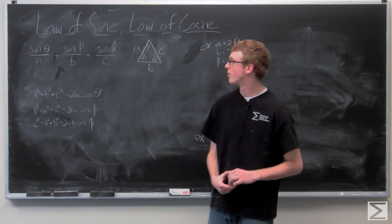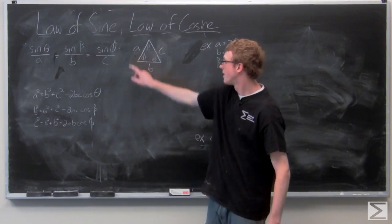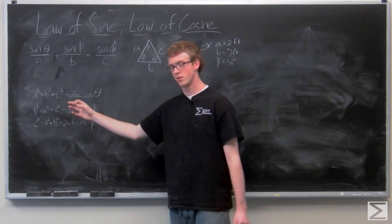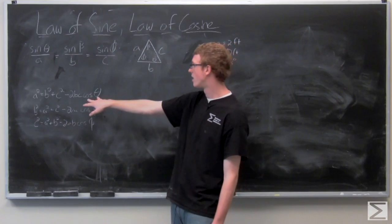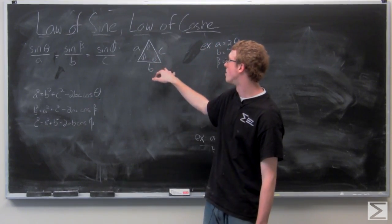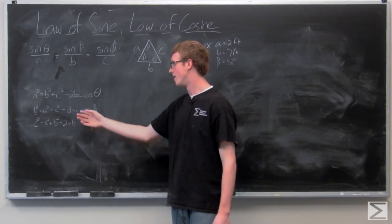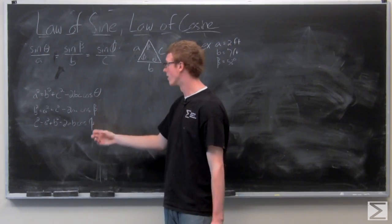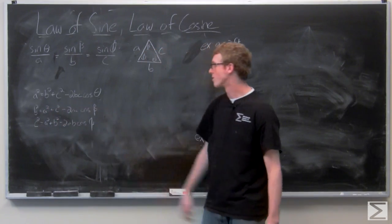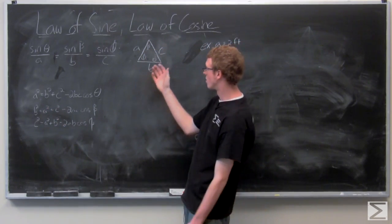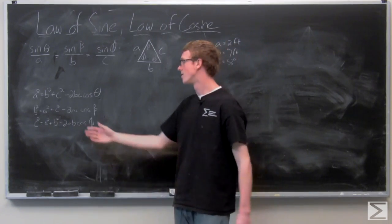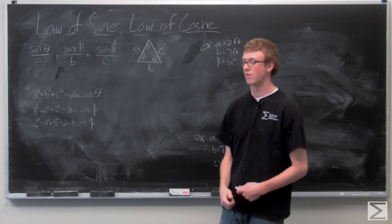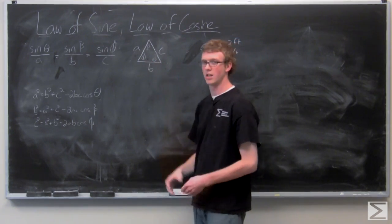We have A squared equals B squared plus C squared minus 2BC times the cosine of theta, which is the angle opposite A. The other two forms for this triangle are: B squared equals A squared plus C squared minus 2AC cosine of beta, and C squared equals A squared plus B squared minus 2AB cosine of phi, which is the angle opposite C.